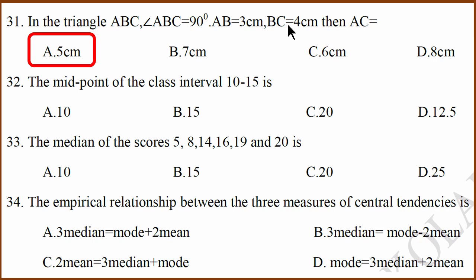Midpoint of class interval, 12.5, which is 10 plus 15 divided by 2. Median of the scores, it is middle term. But in this case there are two middle terms, which means we have to take average. Average of 14 and 16 is 15.